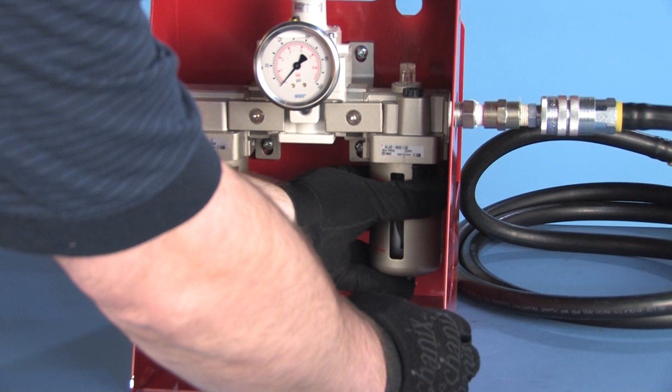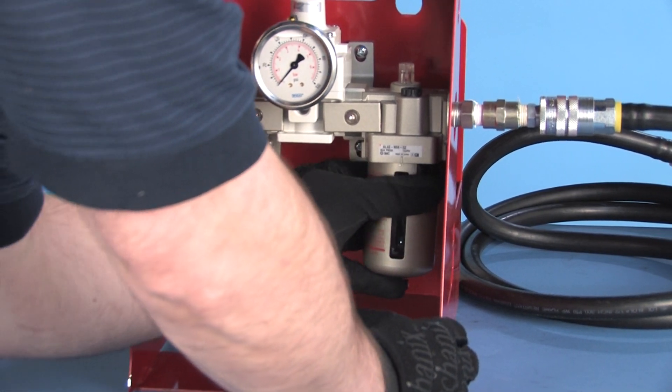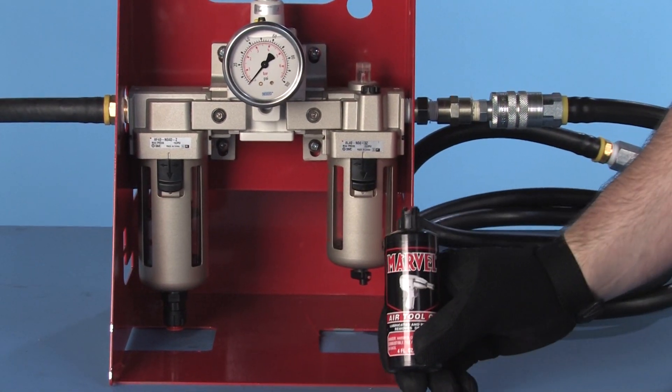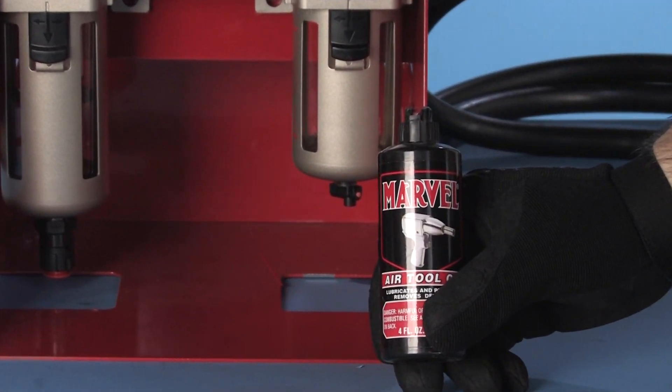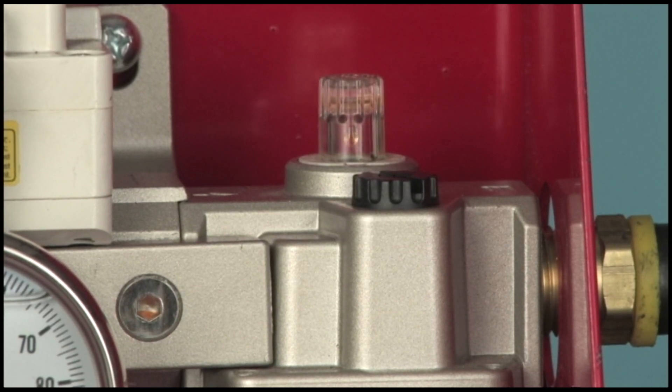Depress the detente and twist the clear plastic reservoir to remove it. Fill it to the indicator mark with a quality air tool oil. With air flowing to the tool, you will be able to see drops of oil from inside the clear plastic knob on top of the lubricator.